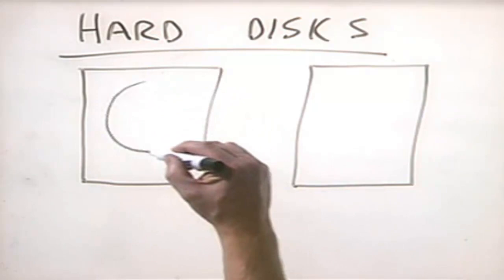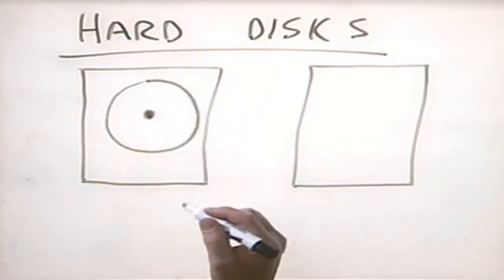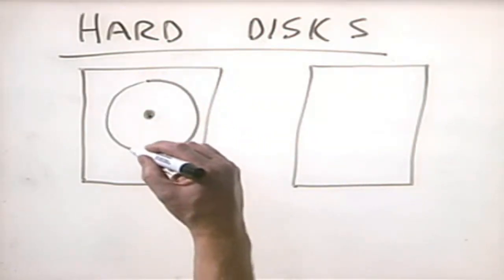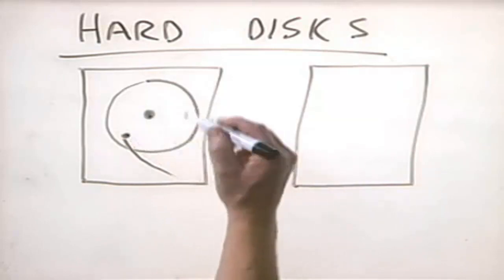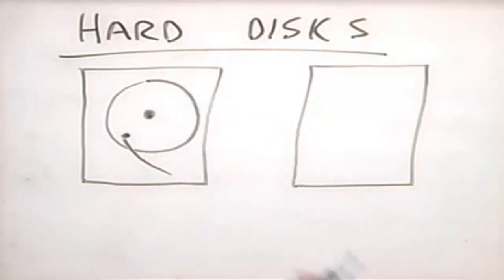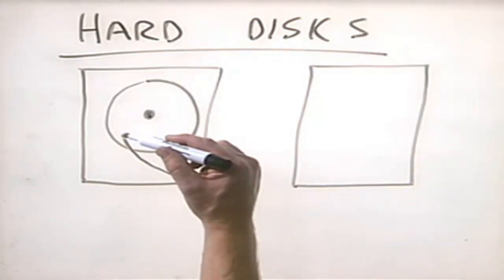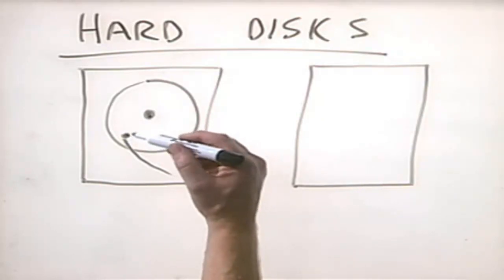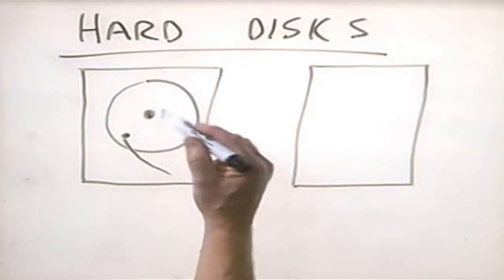Inside the hard disk drive are a series of platters — aluminum discs coated with a magnetic material used to store data. There's an armature with a head on it used to read and write information from the surface of the platter. Unlike a floppy disk drive, the head on a hard disk drive does not actually touch the surface of the hard disk. Remember, the floppy disk heads physically grip the disk, which is why they wear out so fast.